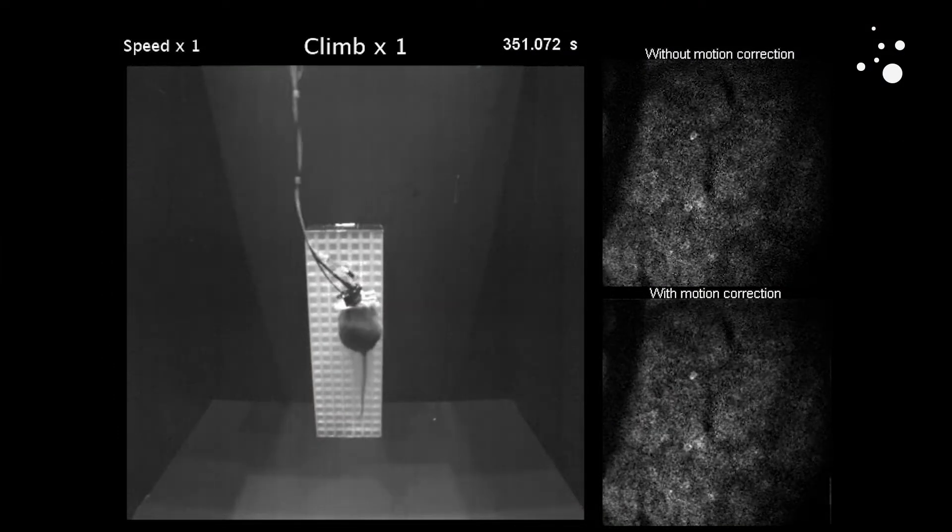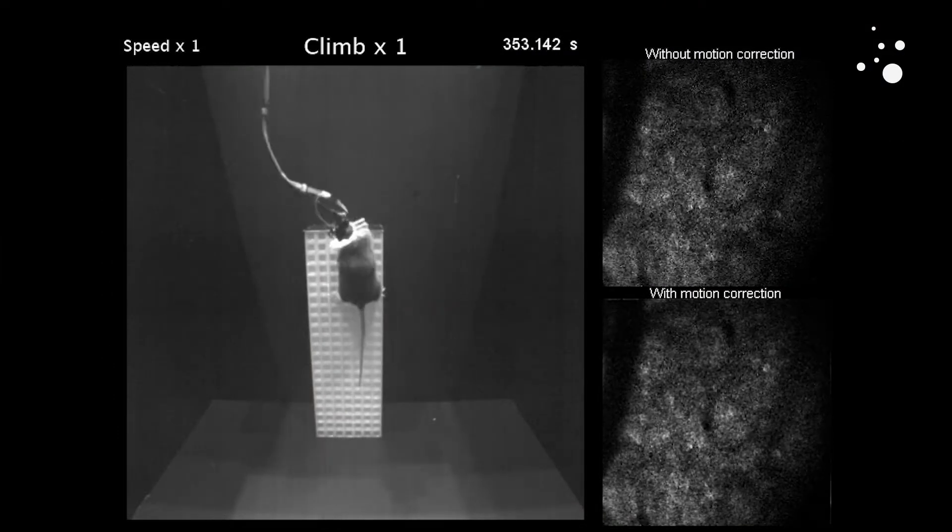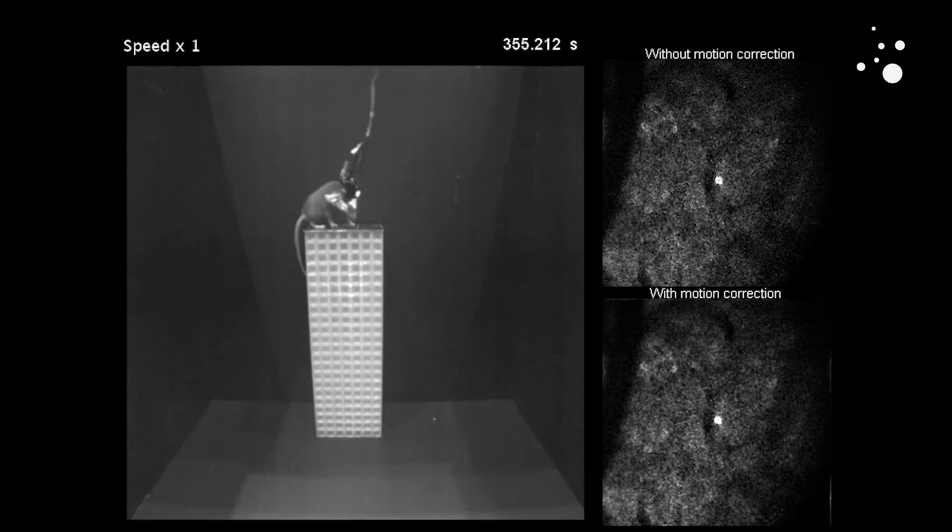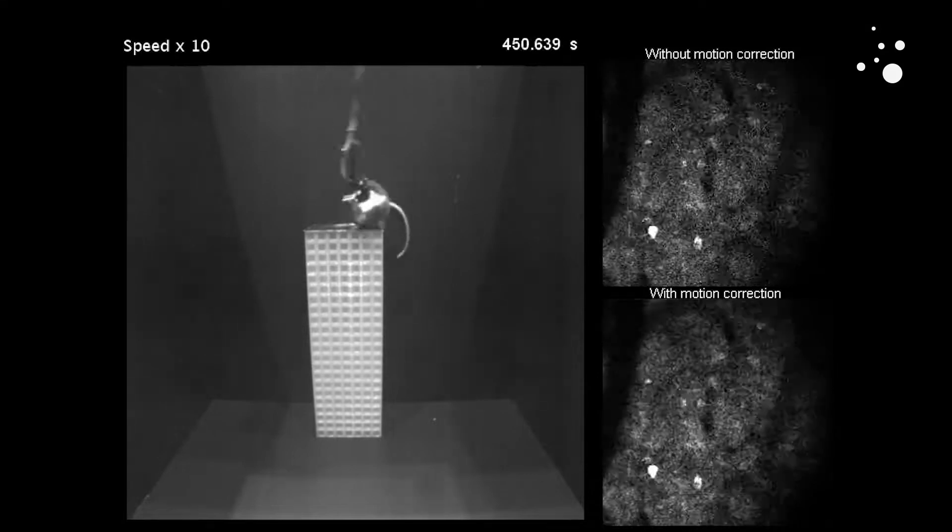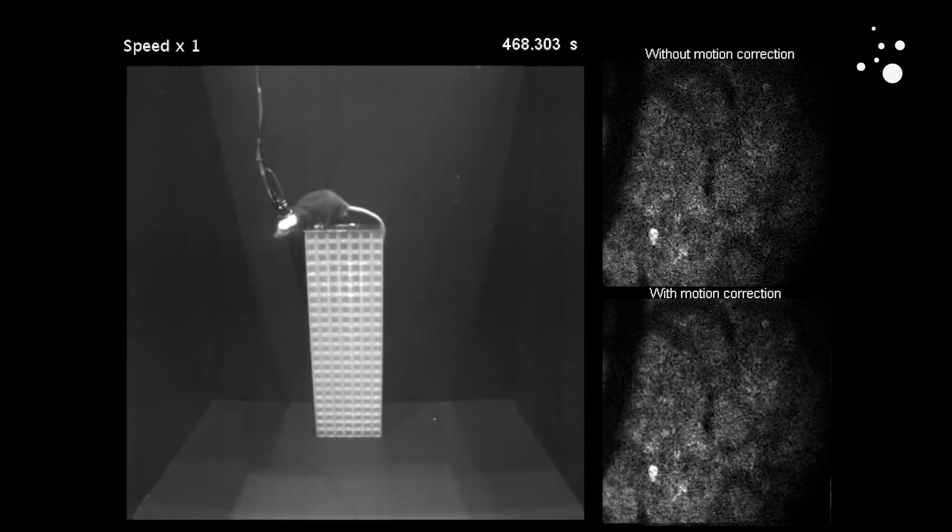Mini2P can follow the mouse no matter what it does. That means it has to be extremely stable. Mini2P can follow the same brain cells with precision for more than a month. And it keeps these cells in focus even when the mouse is very active.